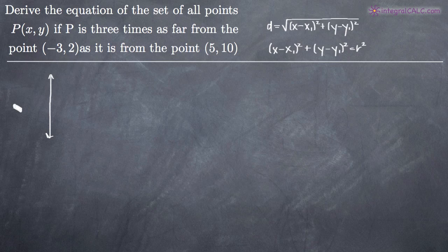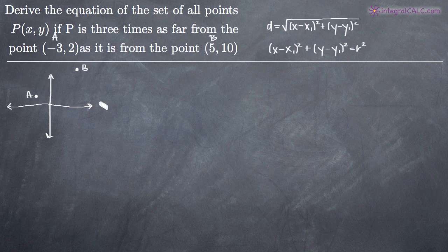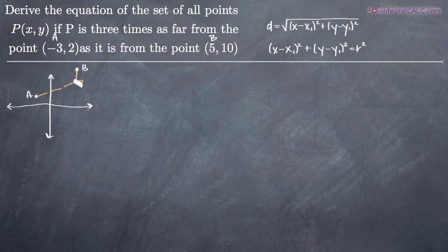With that in mind, let's go ahead and draw out a graph quickly here to give us a visual. The point negative 3,2 we'll call point A, and that's going to be right about here. This is a rough sketch — we just want to get a visual. Then we have the point 5,10 which we'll call point B, maybe right about here. So we have point A and point B, and then we have the center of the circle P of xy. So P is three times as far away from A as it is from B — imagine a distance of one and then three lengths.